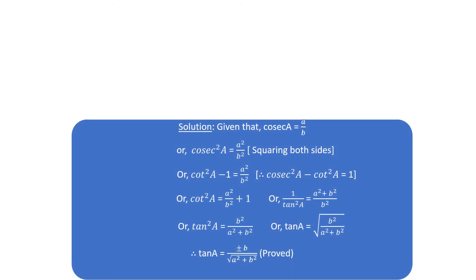Solution. Given that cos α equals a by b, squaring both sides: cos² α equals a² by b². Then cos² α minus 1 equals a² by b² minus 1. We know cos² α minus sin² α equals 1, so rearranging gives cos² α equals a² by b² plus 1, moving minus 1 to the opposite side.